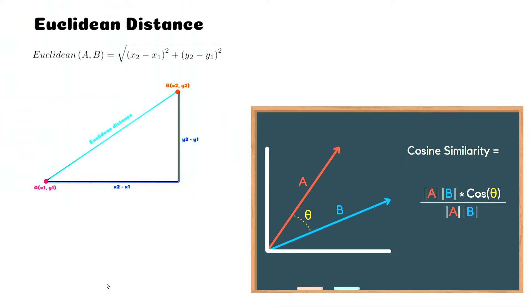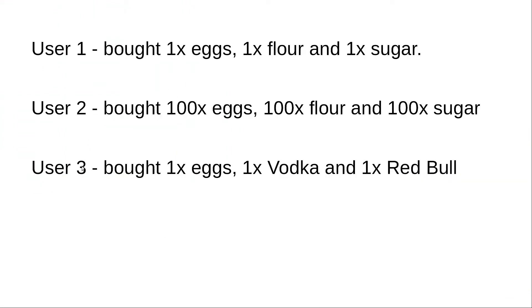I have these three users: user one, user two, and user three. User one bought 1x eggs, 1x flour, and 1x sugar. User two bought 100x eggs, 100x flour, and 100x sugar. And user three bought 1x eggs, 1x vodka, and 1x Red Bull.